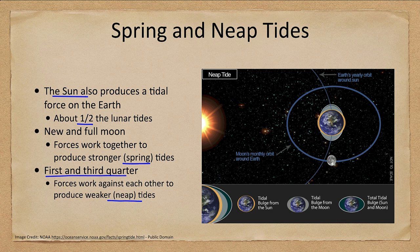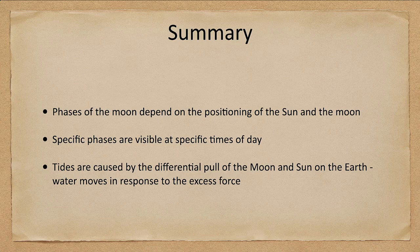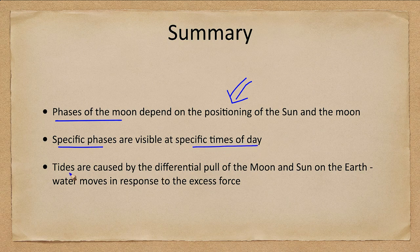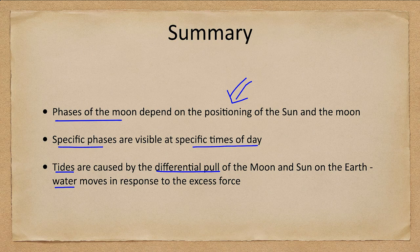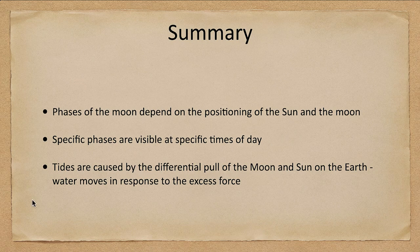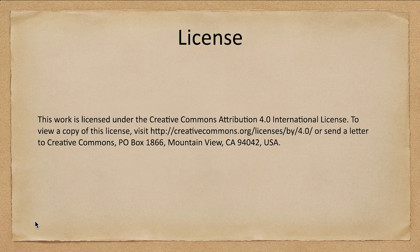Let's finish up with our summary. We looked at the phases of the moon and how they depend on the positioning of the sun and moon in the sky. Specific phases are visible at specific times of day. We also looked at tides caused by the differential pull of the moon and sun on Earth, where water moves more or less depending on that force — giving us high tides and low tides at different times. That concludes this lecture on phases of the moon and tides. Until next time, have a great day everyone.